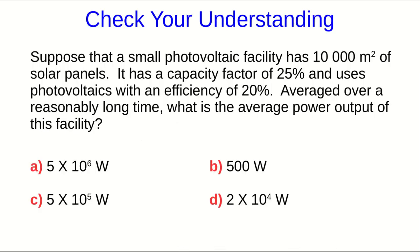Let's check your understanding. Suppose we have a small photovoltaic facility. It has 10,000 square meters of solar panels with an efficiency of 20%, and it runs at a capacity factor of 25%. Averaged over a reasonably long time, what's the average power output of this facility?